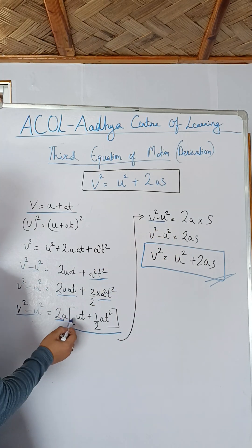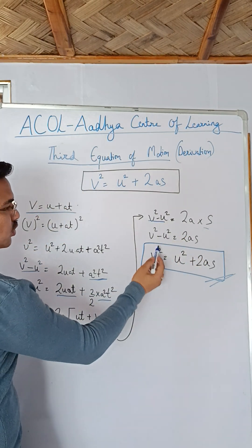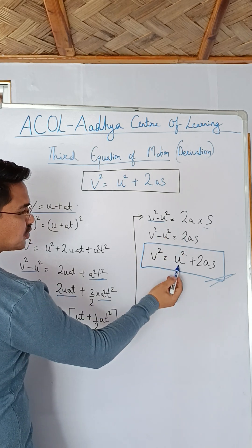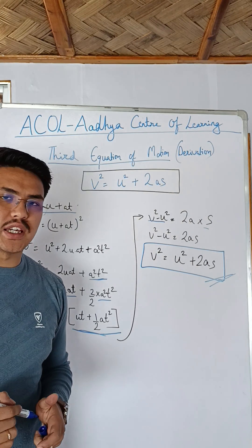So v square minus u square equals 2as. So v square is equals to u square plus 2as. Therefore v square is equals to u square plus 2as. Thank you.